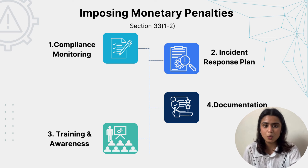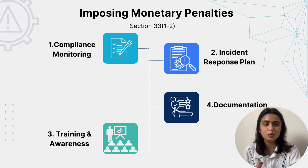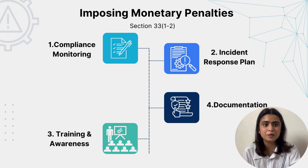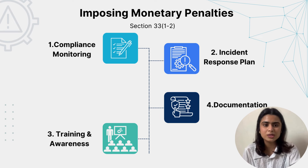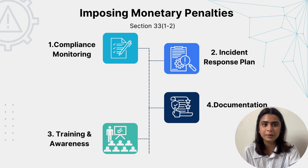Fourth, documentation. We need to maintain detailed records of compliance efforts, breach incidents, and mitigation actions. For example, Facebook, also known as Meta, maintains comprehensive records of its data handling practices, including compliance audits, which have been crucial during regulatory reviews. Keeping detailed records helps the organization demonstrate it follows the DPDP Act 2023 during checks, which can lower penalties.